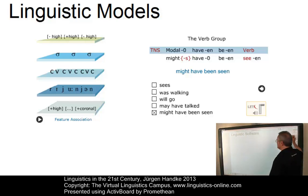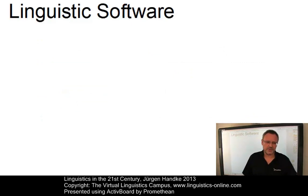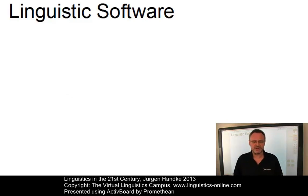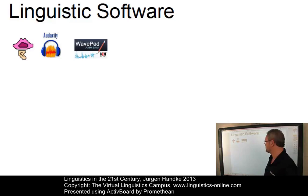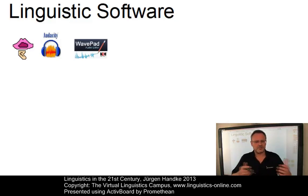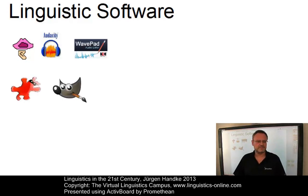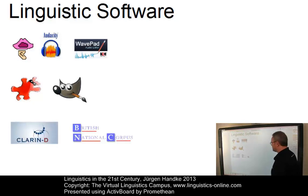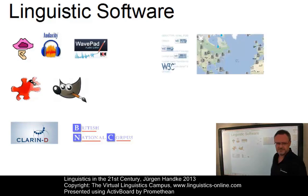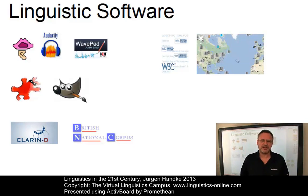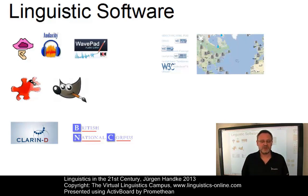As already mentioned, linguistic software is now an important issue. Today, a variety of software tools can be used to handle linguistic data or to construct linguistic models. There are audio analysis tools such as Praat, Audacity, or several wave editors. We have graphic tools such as Urban View or Gimp. There are several corpus interfaces and data repositories around. And last but not least, modern web technologies that allow us to integrate language maps, speaker locations and many more, now constitute a major part of linguistic web technologies.